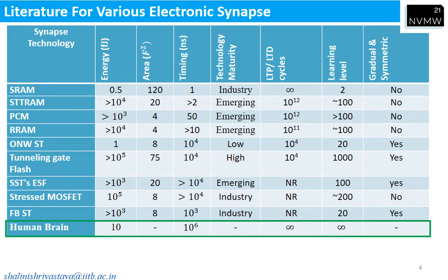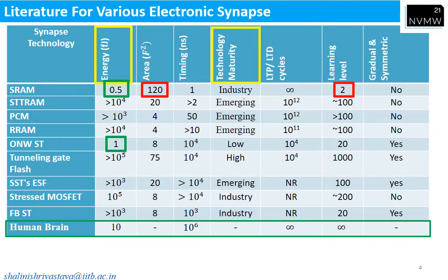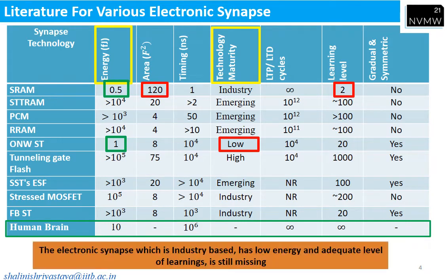People have demonstrated different electronic devices as synapses. SRAM is low energy but requires more area and has only binary levels of learning. STT-RAM, PCM, and R-RAM are emerging technologies. Organic devices have low energy but are not CMOS compatible. An industry-based electronic synapse with low energy and adequate levels of learning is still missing. Flash is a highly manufactured device and its evaluation as a synapse is discussed in the next slide.